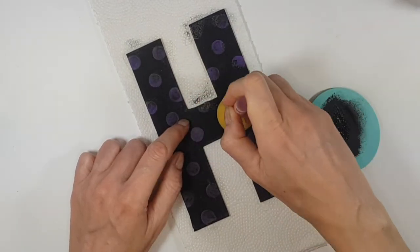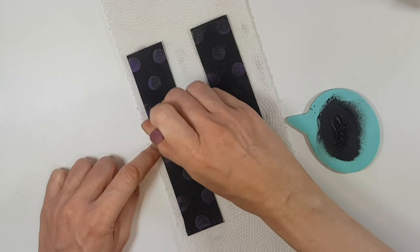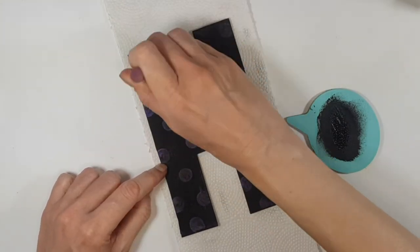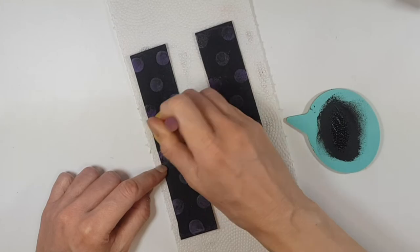And what I want from this is just go over my dots, and just make them less vibrant. Just because I want this to look like an old Happy Halloween banner sign, you know what I mean? I don't want it to look brand new.